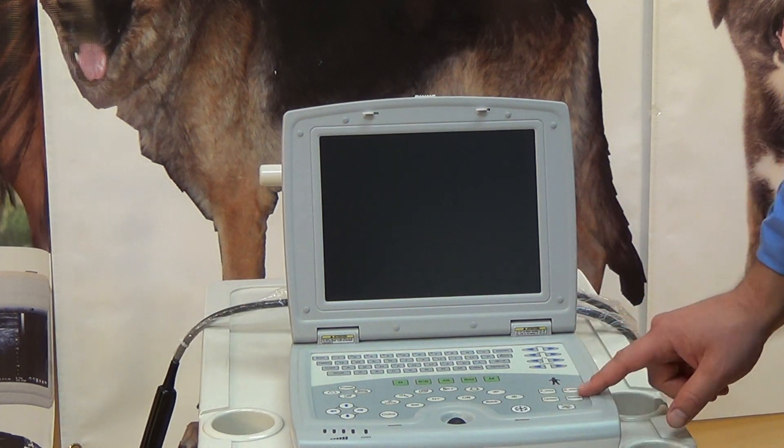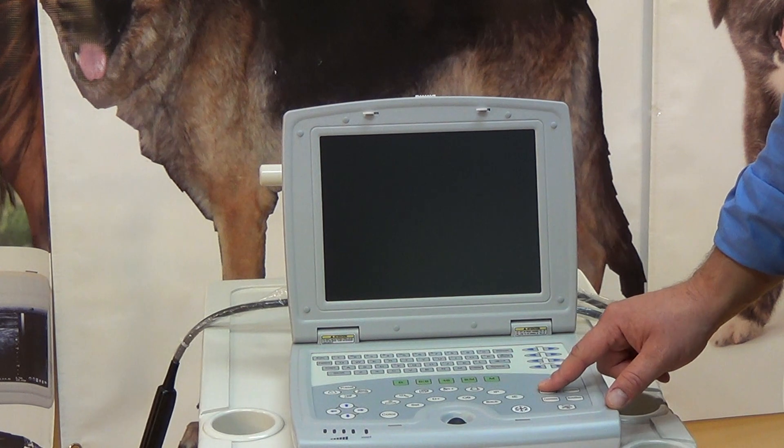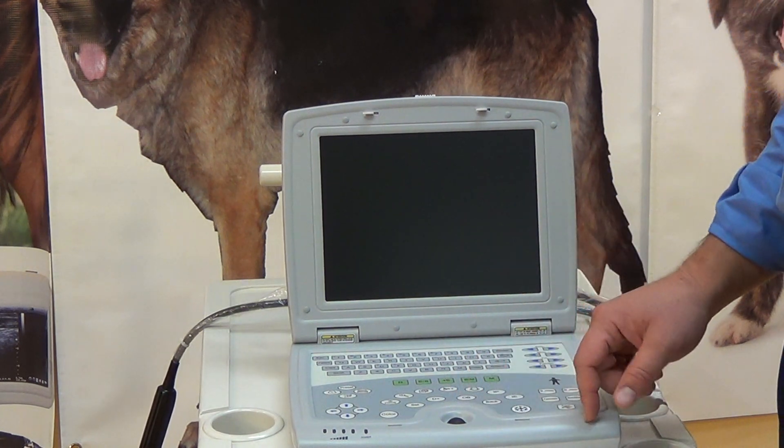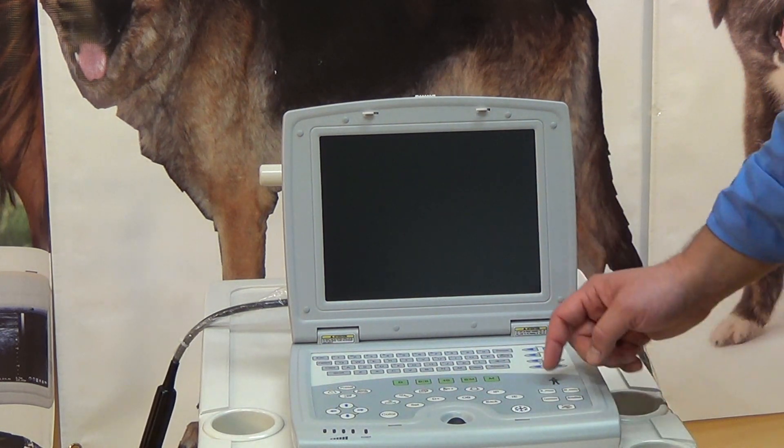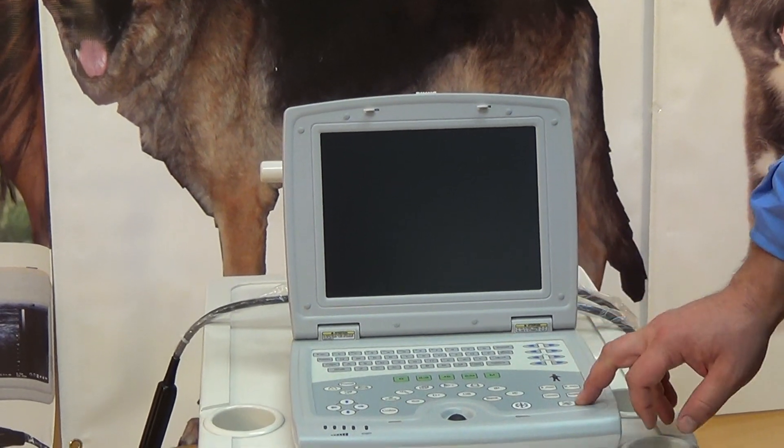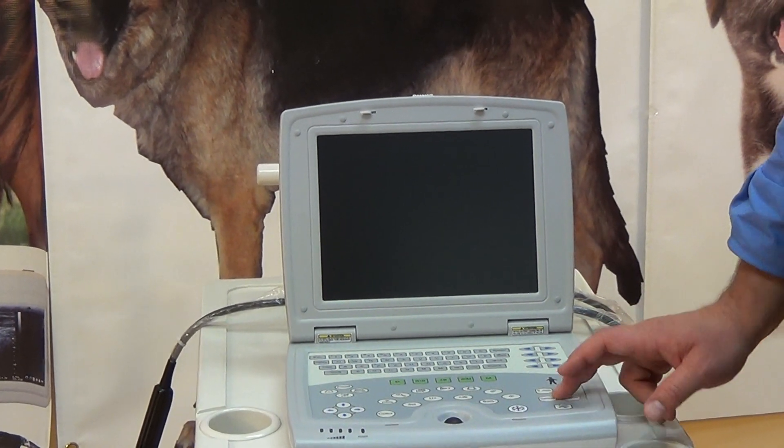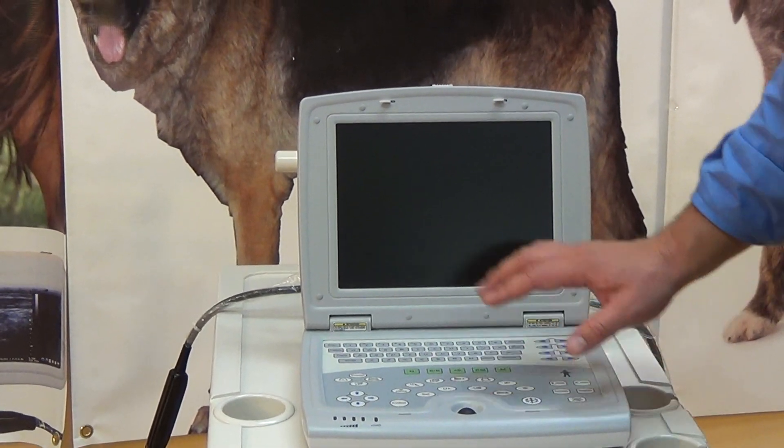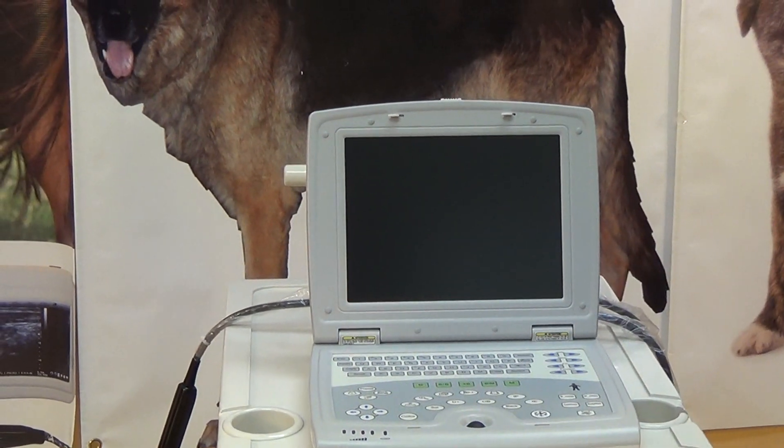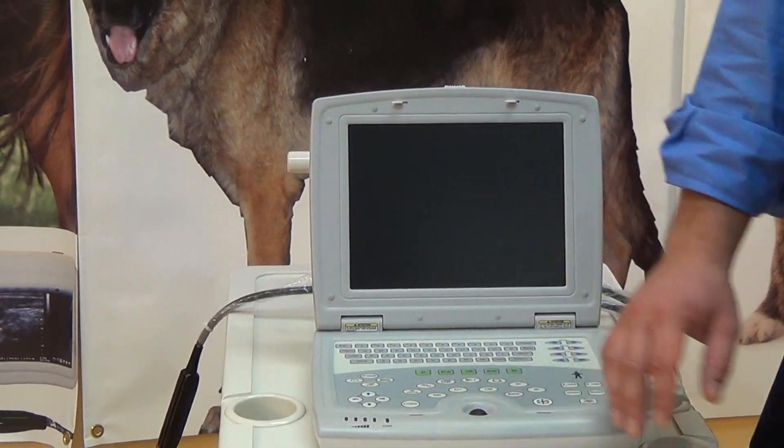And then we have our basic measurements. So basically hit the B mode, set one point, set the other, and it comes up as measurements. And that's for both B mode and M mode. And then finally is the comment button that's also self-explanatory. You hit it, you set where you want to type, and then hit again, and then you're out.